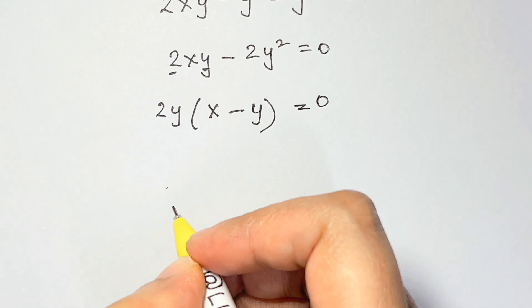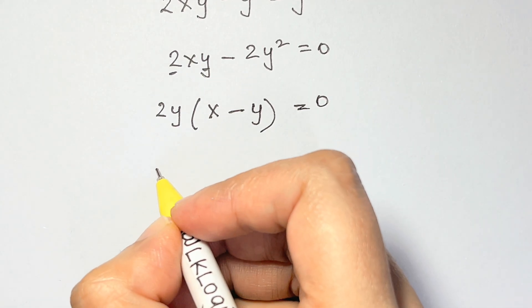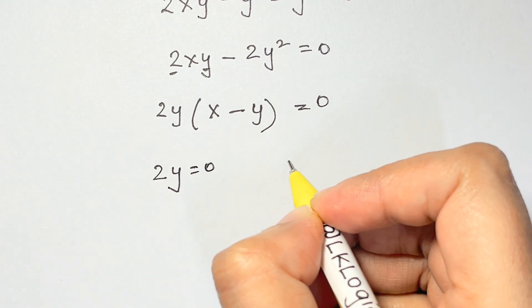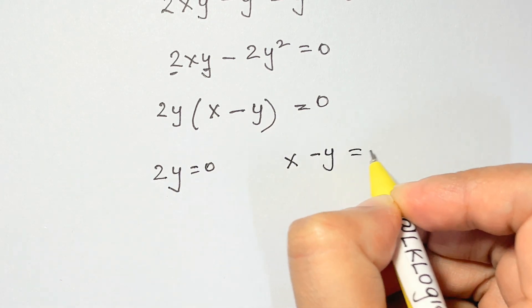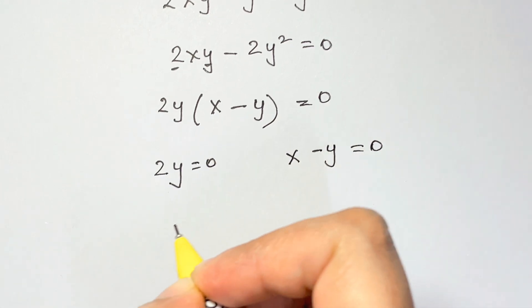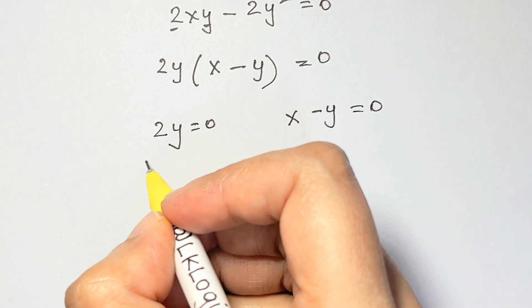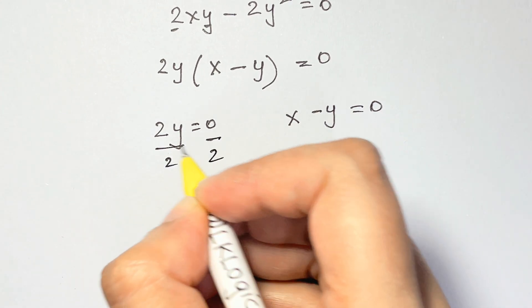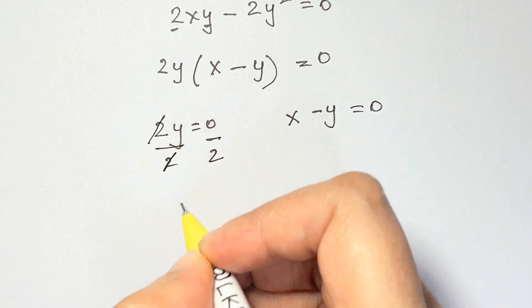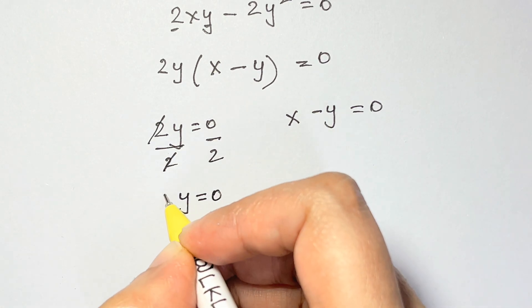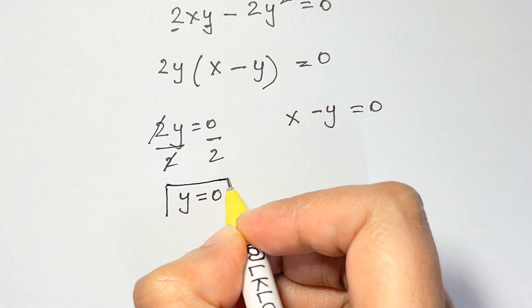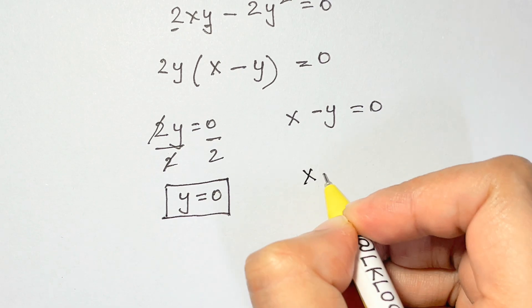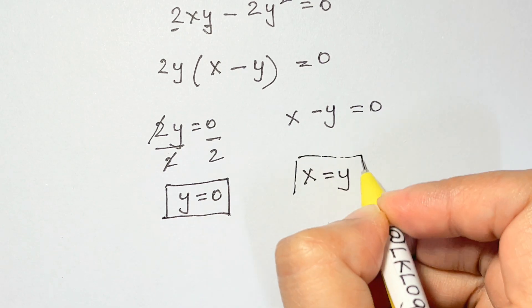We have two solutions: 2y equals zero, and x minus y equals zero. Dividing 2y = 0 by 2 gives y equals zero. And x minus y = 0 gives x equals y. So we have two solutions.